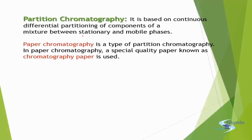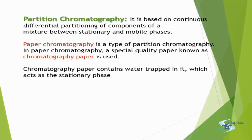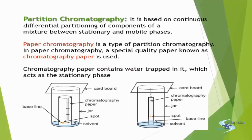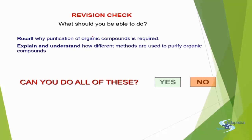Partition chromatography is based on the continuous differential partitioning of components of the mixture between the stationary and mobile phase. Paper chromatography is one type of partition chromatography. A special chromatography paper is used, which contains water trapped in it acting as the stationary medium. The solvent moves from the baseline, the spot migrates, and the jar is covered with cardboard. The mixture is separated based on the differential movement of its components.